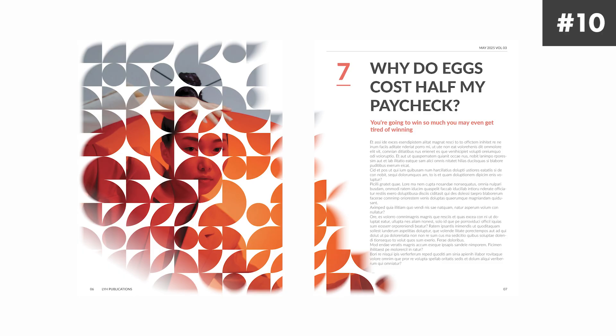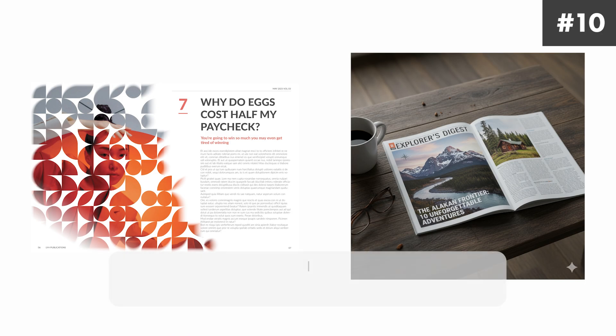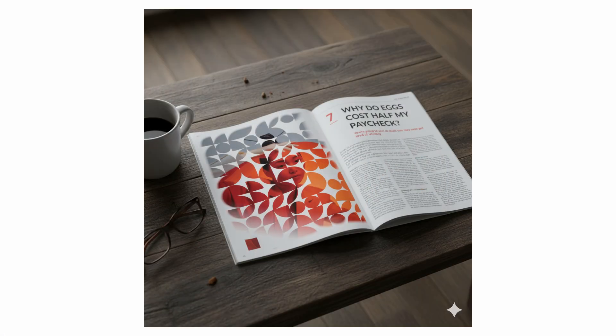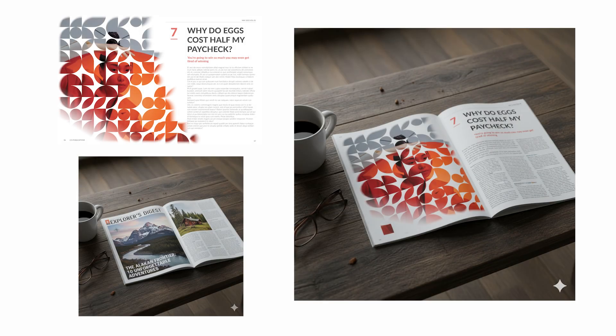The last one I'll go over is mock-ups. We do a lot of these and they're super useful — we want whatever we're doing to look great on a professional product in real life. I took two different layouts we've done before on this channel and also generated an image of a magazine open on a table. I told Nano Banana, using the open magazine as a mock-up base, to replace the other two images as the left and right spread — the one with more words as the right spread and the one with less words as the left. It looks amazing. Aside from one small square on the bottom left, everything else looks perfect. The background stayed the same and it was able to input the pages into the actual mock-up.